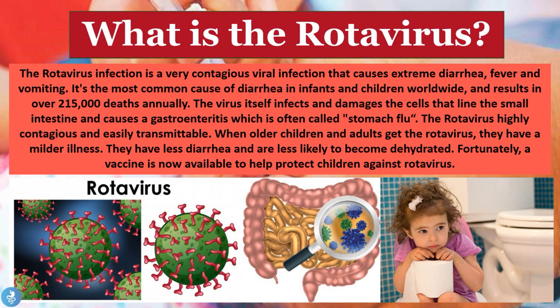The rotavirus is highly contagious and easily transmissible, but when older children and adults get it they have a much milder illness — less diarrhea and are less likely to become dehydrated. Fortunately, a vaccine is now available to help protect our children against the rotavirus.